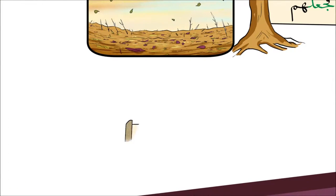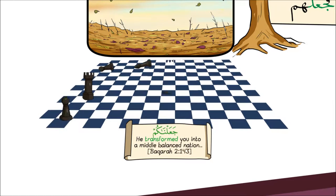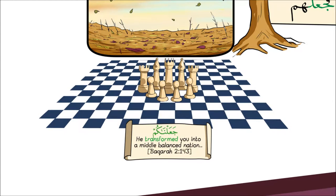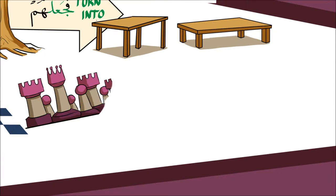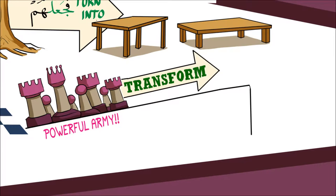For example, Allah عز وجل says: وَكَذَلِكَ جَعَلْنَاكُمْ أُمَّةً وَسَطًا — 'He took you and made you into a balanced nation. You were already there but He transformed you.' So Allah is saying He transformed these people. And when جَعَلَ is used, there is something before and something after. So they were a powerful army before — and now when Allah transformed them, what did they become? Now we'll find out.